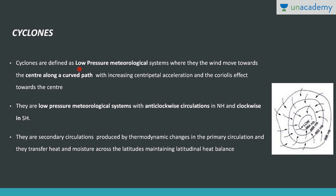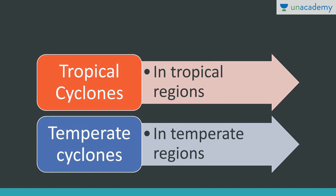Cyclones are low pressure meteorological systems where the wind moves towards the center along a curved path. The winds are moving towards the center, that is the low pressure, along a curved path with increasing centripetal acceleration and the Coriolis effect. Coriolis force is required for development of cyclones. These are low pressure meteorological systems that move in anti-clockwise direction in the northern hemisphere and clockwise direction in the southern hemisphere. They are secondary circulations produced by thermodynamic changes in the primary circulation, and they transfer heat and moisture across the latitudes, thus helping in maintaining latitudinal heat balance.